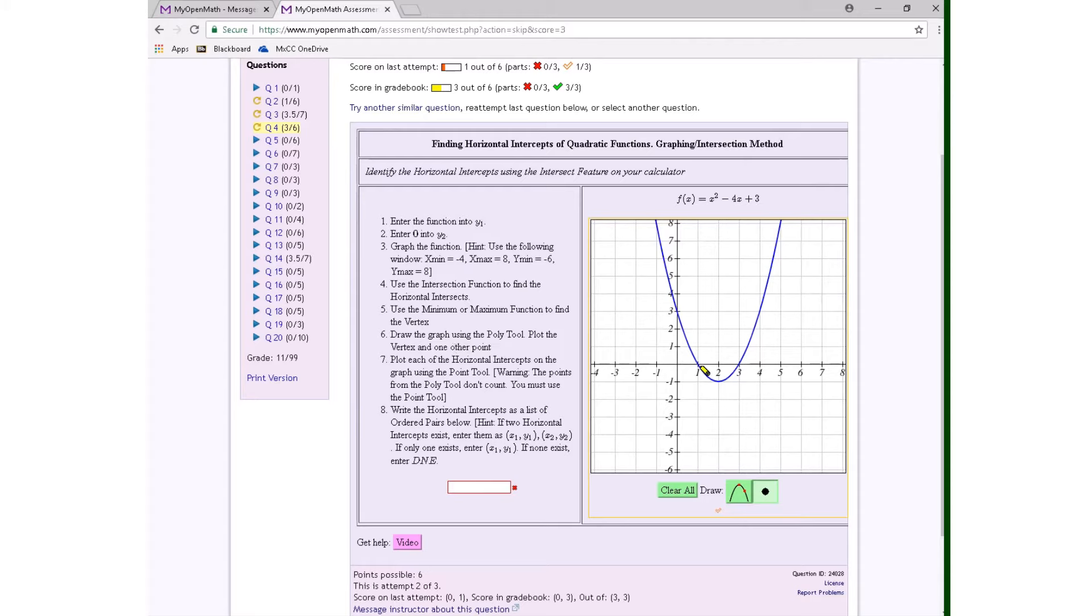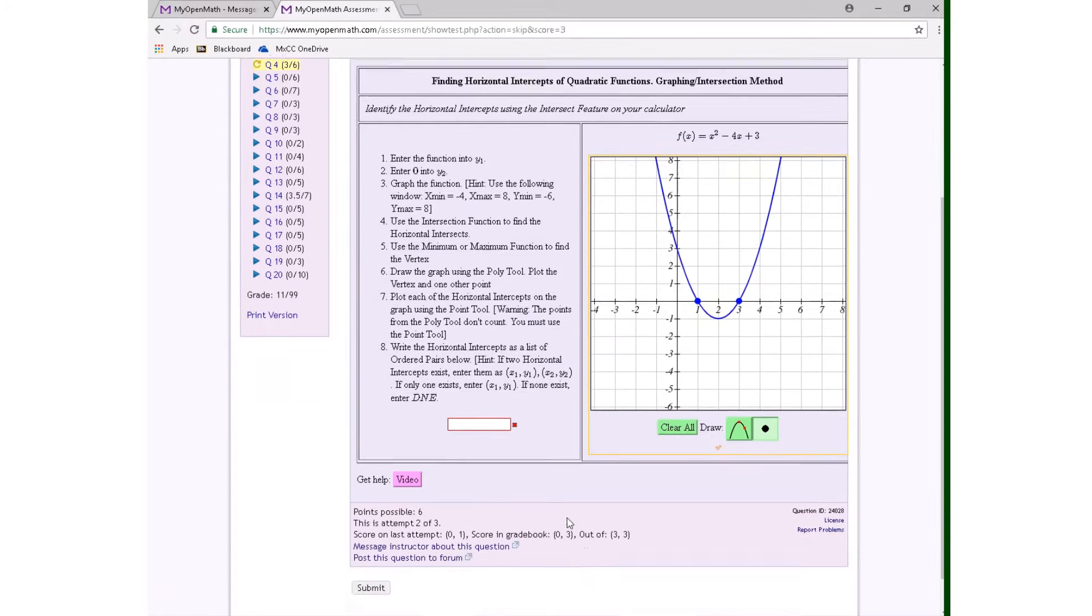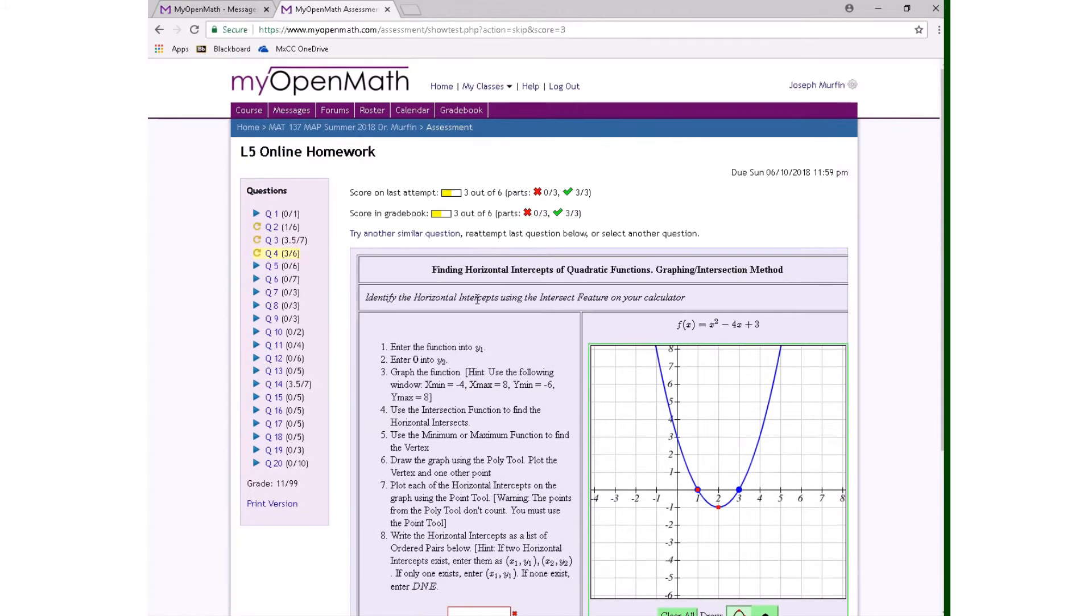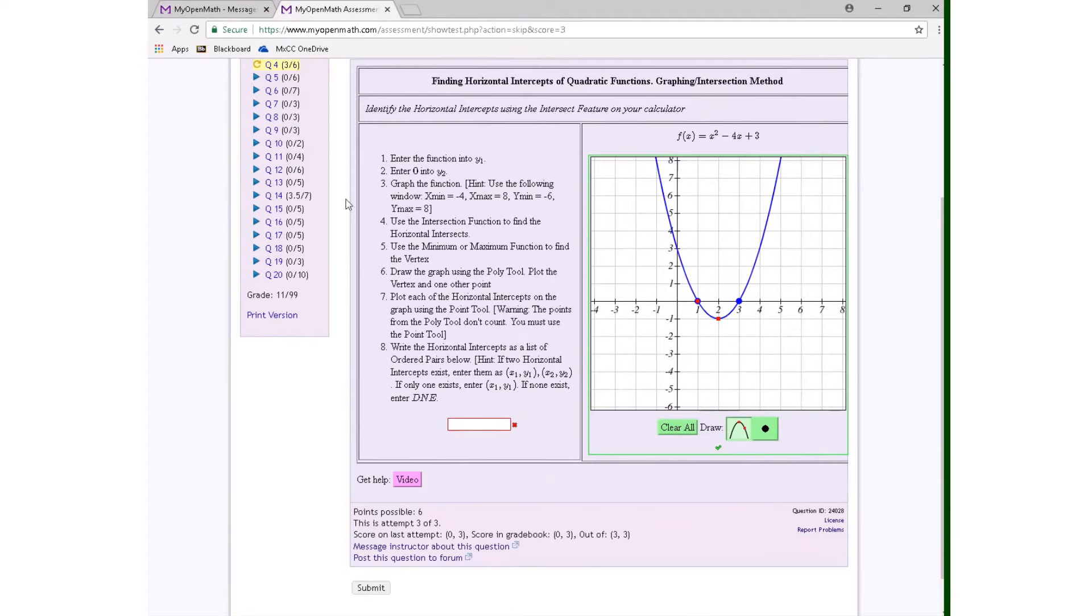However, I also need to go through and tell MyOpenMath that I know that these two are horizontal intercepts using the point tool. And then now this should be okay. Yep, we're good to go. All right, I'm obviously skipping the other parts of the problem because I just want to show you the graphing.